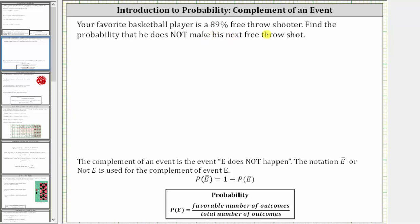Your favorite basketball player is an 89% free throw shooter. Find the probability he does not make his next free throw shot.